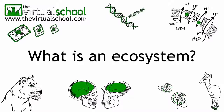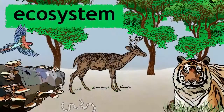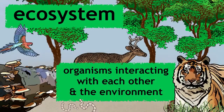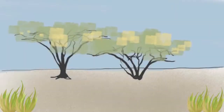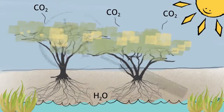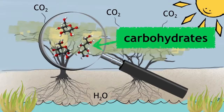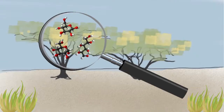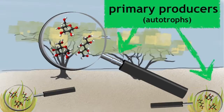An ecosystem is a community of living organisms interacting with each other and the environment around them. Ecosystems are built from plants upwards as they harness CO2 and water, and using the sun's energy, plants create energy-containing molecules, which are carbohydrates. This is why they are often referred to as primary producers or autotrophs within the ecosystem.